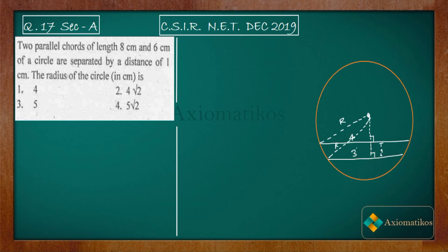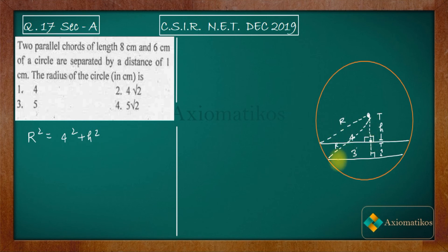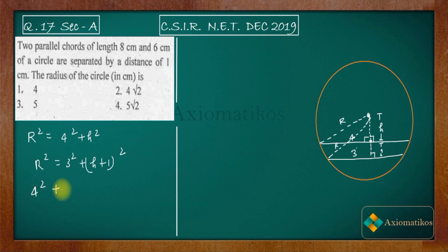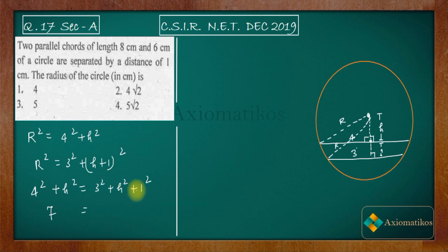The distance between the two chords is 1 cm as given. Let the distance from the center to the farther chord (8 cm) be h. Then the distance to the nearer chord (6 cm) is h + 1. Using Pythagoras on the upper right triangle: r² = 4² + h². On the lower triangle: r² = 3² + (h + 1)². Equating: 4² + h² = 3² + (h + 1)².